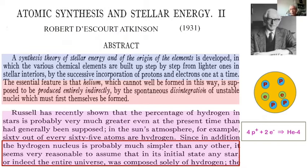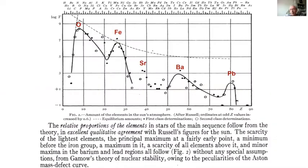Apart from that important statement, the nucleosynthesis part of Atkinson's paper was totally wrong. Nevertheless, he claimed his scheme reproduced Russell's solar abundances in excellent qualitative agreement, basing his work on Gamow's theory of nuclear stability and the Aston mass defect curve. From what can be understood reading the paper, he essentially adjusted his recipes to match Russell's data, and was fairly satisfied with his theory.